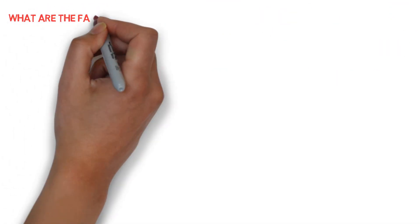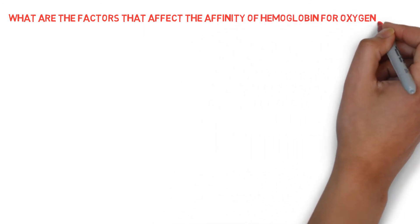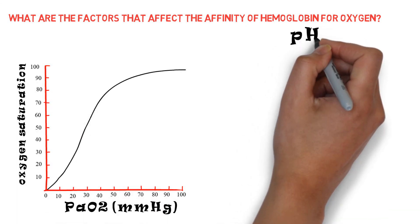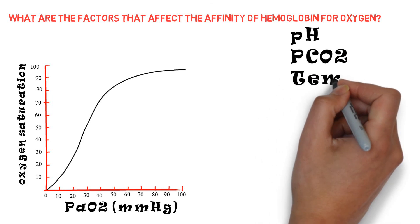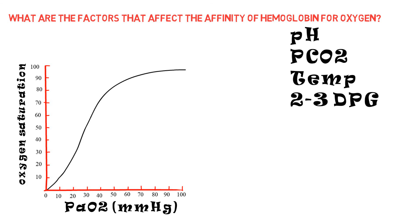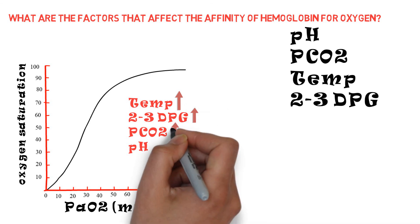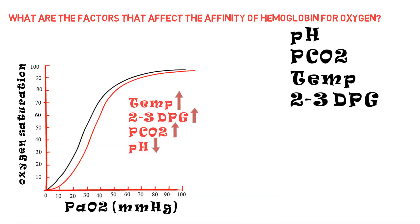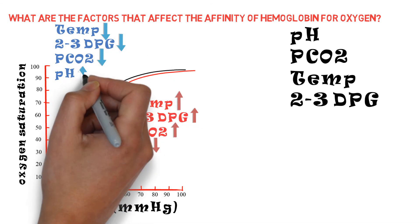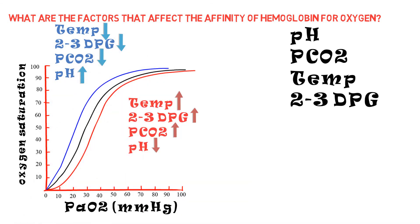What are the factors that affect the affinity of hemoglobin for oxygen? Four important conditions affect the oxygen-hemoglobin dissociation curve: pH, PCO2, temperature, and the concentration of 2,3-diphosphoglycerate (DPG). A rise in temperature, DPG, PCO2, or a fall in pH shifts the curve to the right. When the curve is shifted in this direction, a higher PO2 is required for hemoglobin to bind a given amount of oxygen. Conversely, a fall in temperature, DPG, or PCO2, or a rise in pH shifts the curve to the left, and a lower PO2 is required to bind a given amount of oxygen.